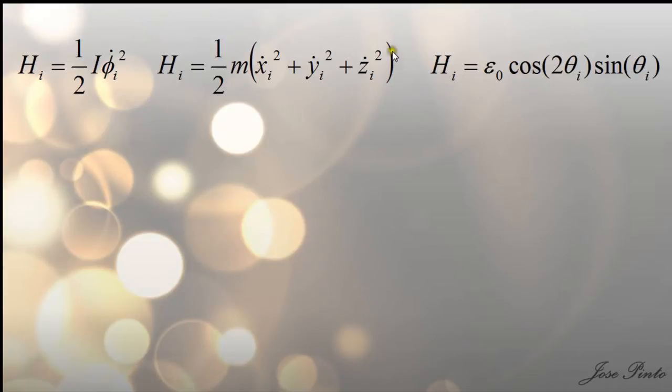The second one, call it System B, is a collection of particles having a Hamiltonian like this one. And, of course, System C with this kind of Hamiltonian.